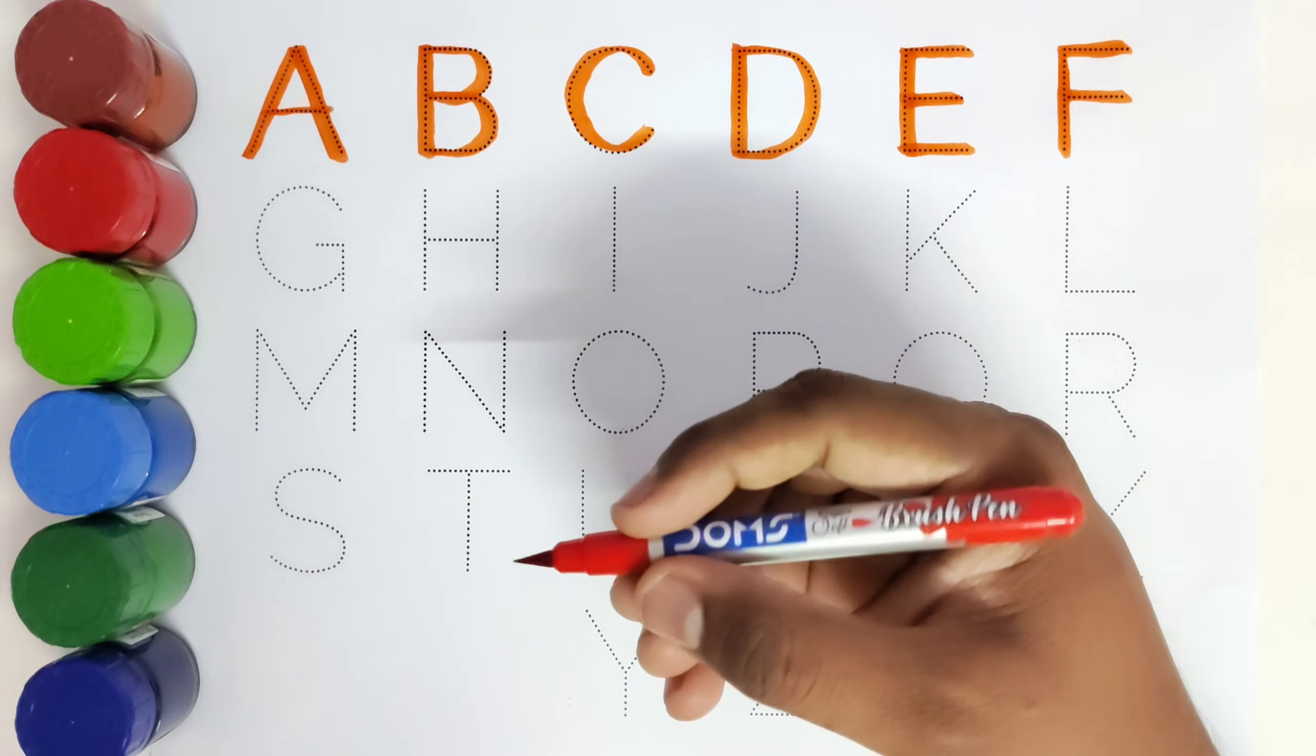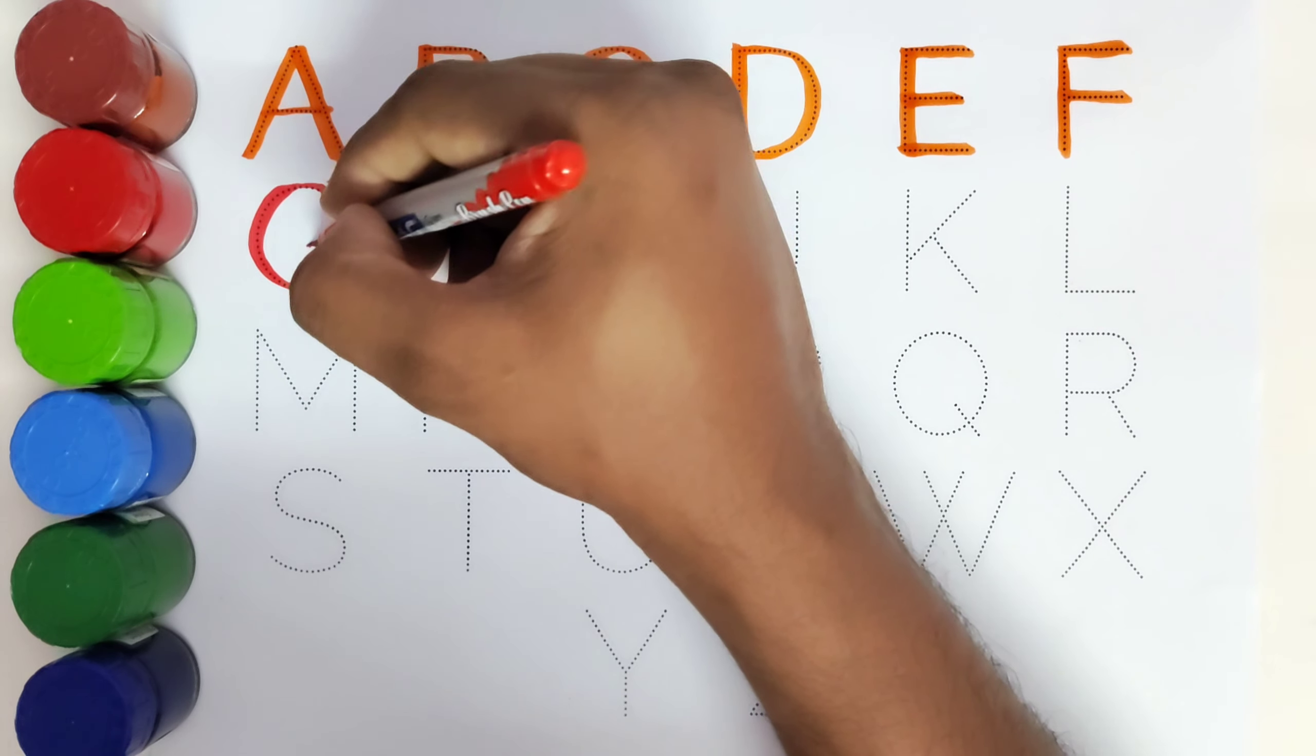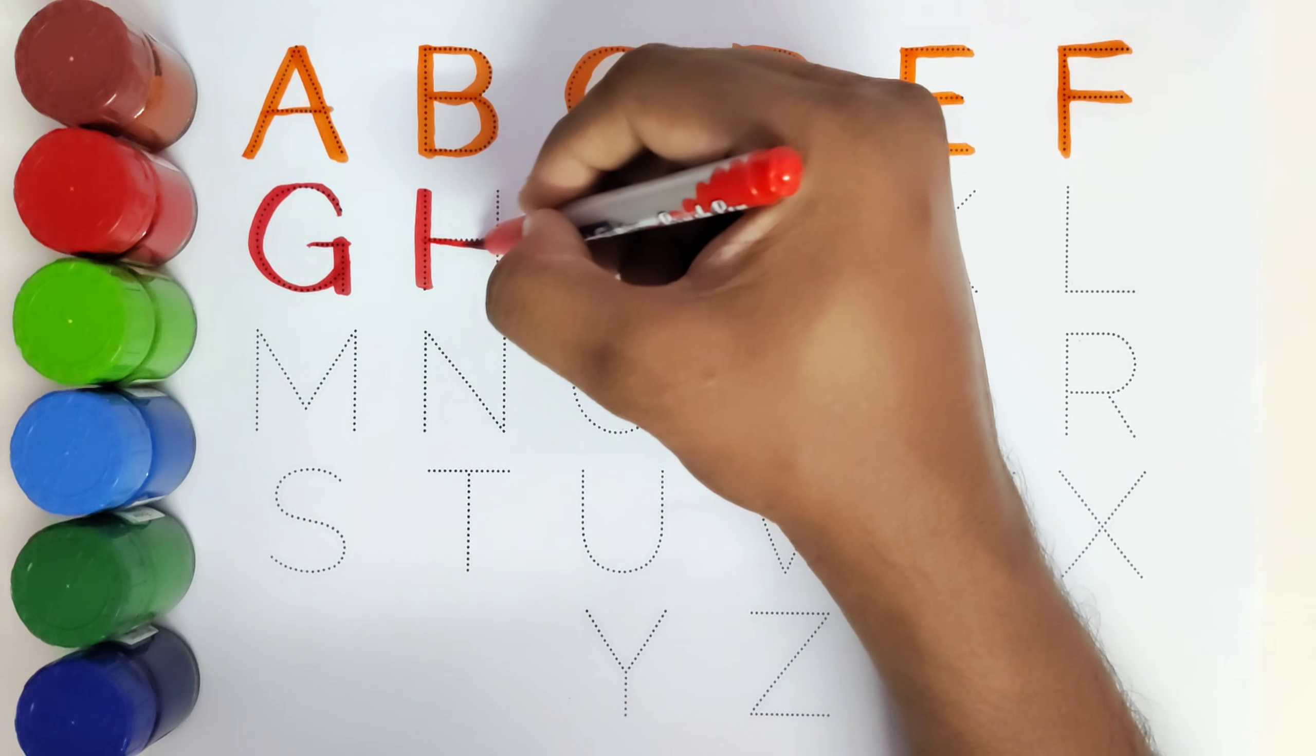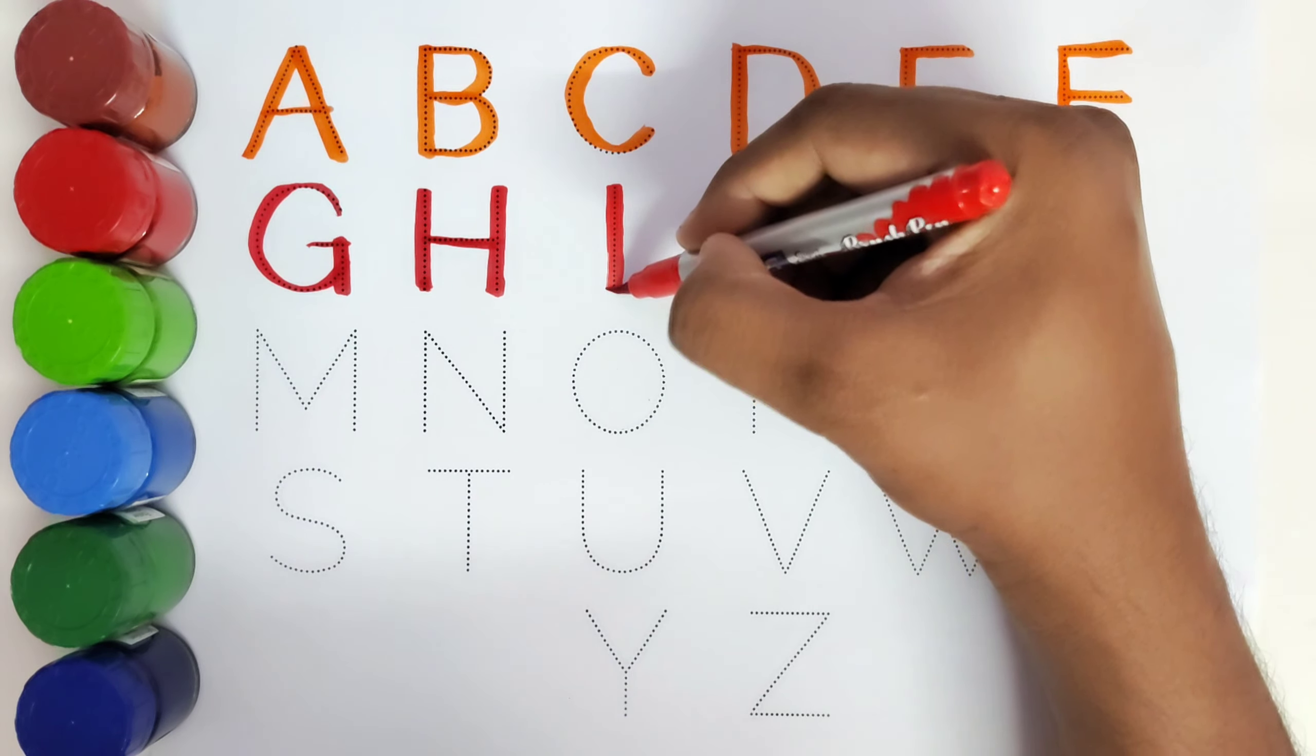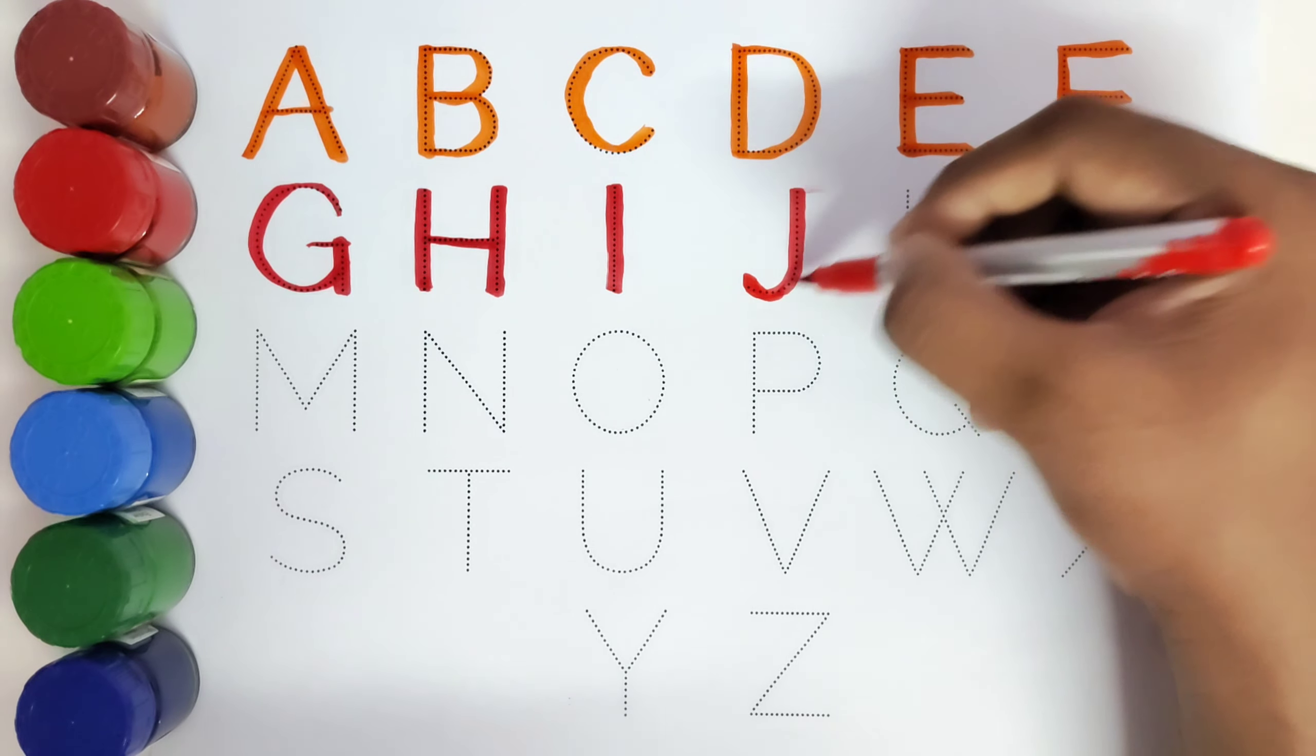This is red color. G. G for Goat. H. H for Hat. I. I for Ice Cream. J. J for Jug.